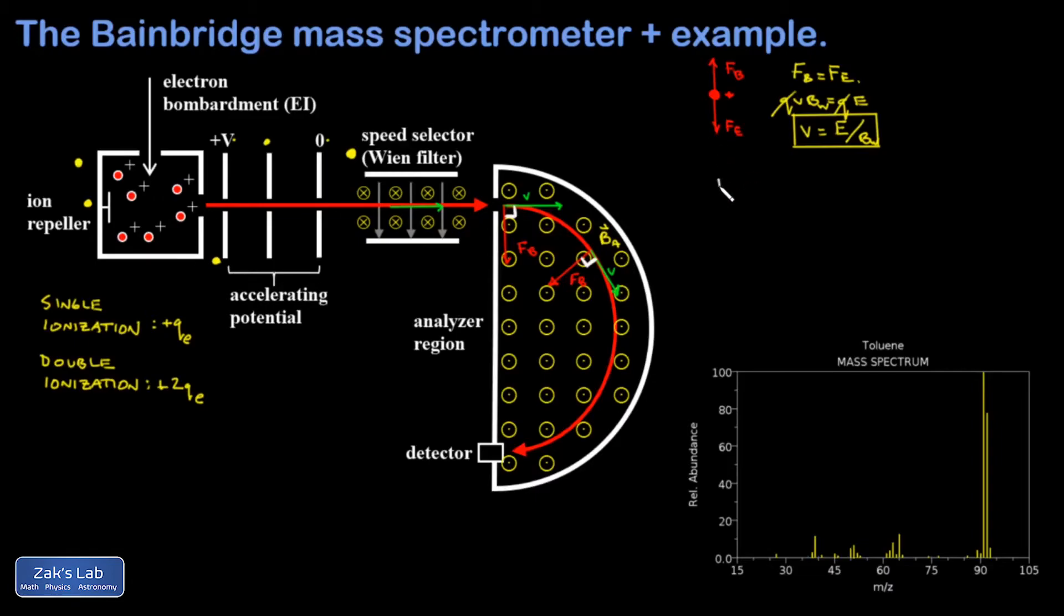Writing down Newton's second law, F net equals MA for one of these particles. There's only one force acting on them, and it's the magnetic force. So that's QVB, again, because the velocity is already perpendicular to the magnetic field. And that's equal to M times the centripetal acceleration, which is V squared over R.